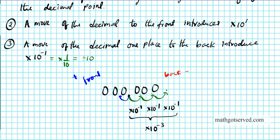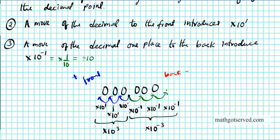If you're going forward, the opposite happens. One place to the front means you divide the number by ten, so to neutralize that you multiply by ten to the one. Each additional place forward adds another times ten to the one — those powers are positive. So moving three places to the front gives times ten to the third, which is multiplying by a thousand. When you move the decimal point three places to the front, you divided by one thousand, so to compensate you multiply by ten to the third.